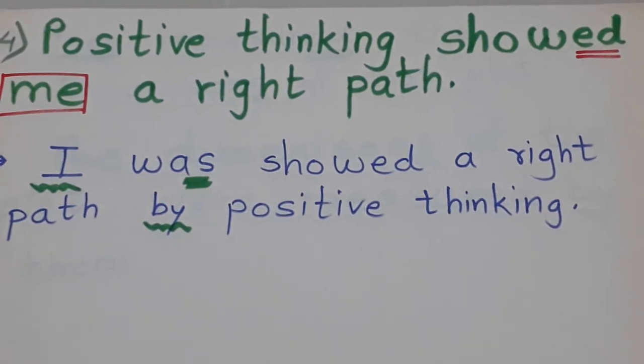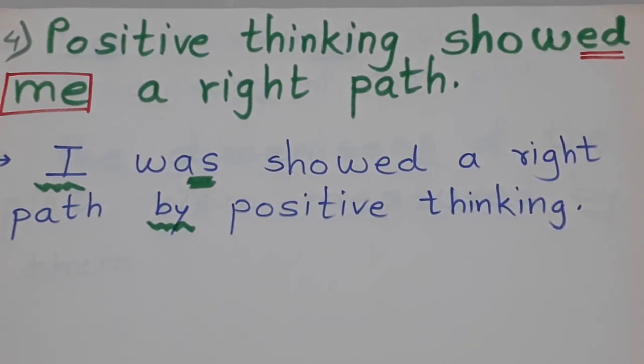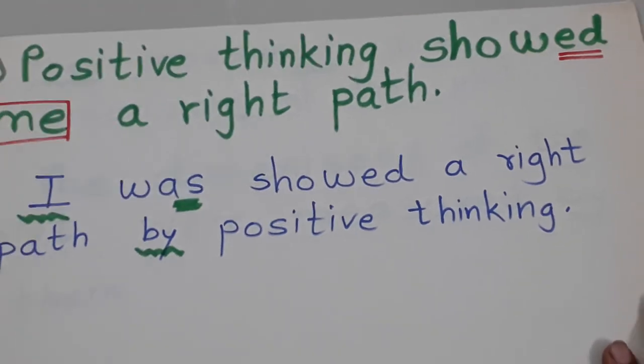Next sentence: Positive thinking showed me a right path. The verb underlined is showed. And then me came, which is third person. When converting to passive voice, me at the start becomes I. Show was in past tense, so it becomes was. I was showed a right path by positive thinking.